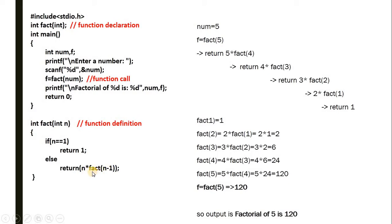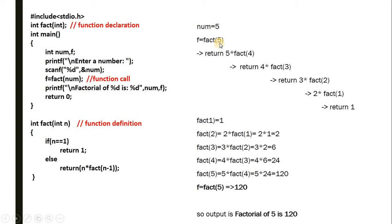When n is not 1, it returns n * fact(n-1). We are calling the same function again — so as you call fact(n-1), it moves back to the function body. n-1 becomes the new n, it checks whether n == 1, if not it again returns n * fact(n-1). This is why we call the fact function a recursive function. Let's take num = 5 as an example.